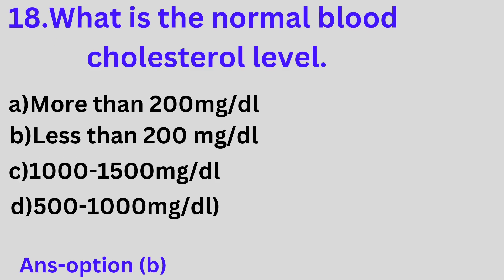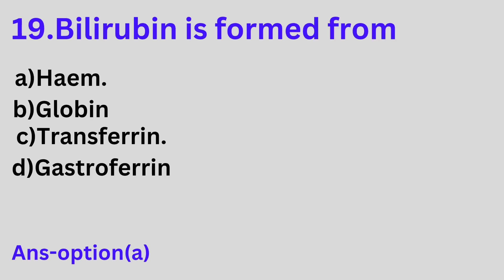Question 18: What is the normal blood cholesterol level? A. More than 200 mg/dL, B. Less than 200 mg/dL, C. 1000 to 1500 mg/dL, D. 500 to 1000 mg/dL. Option B is the correct answer. The normal cholesterol level is less than 200 mg/dL.